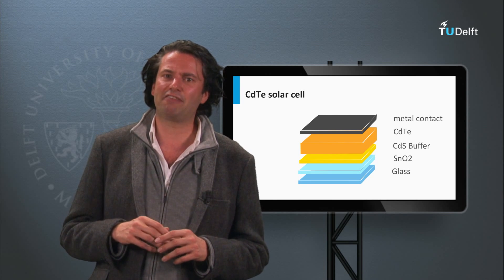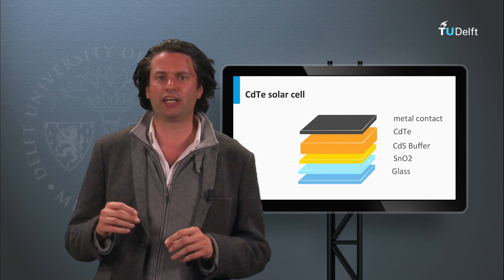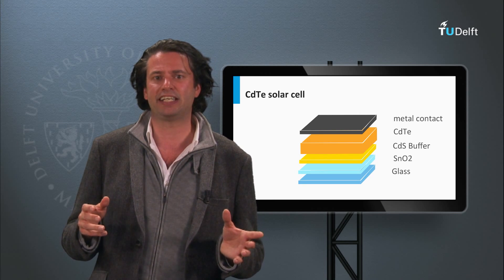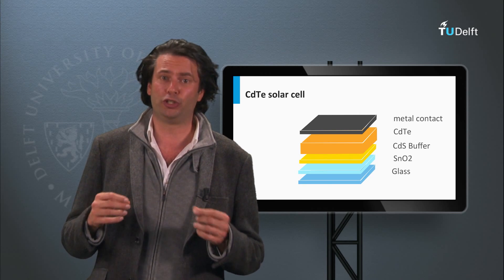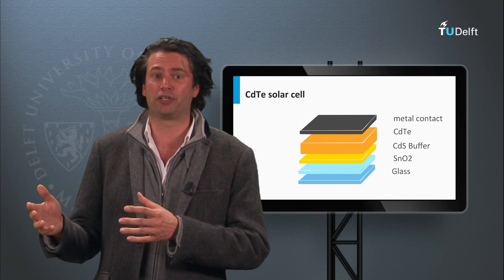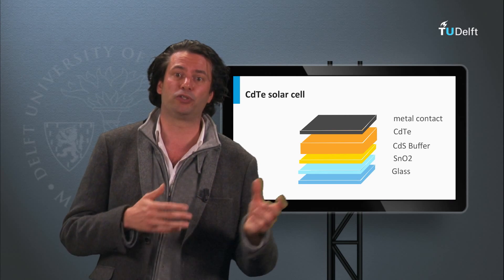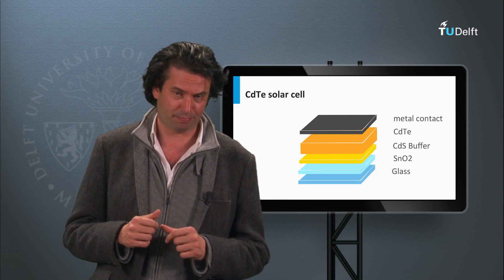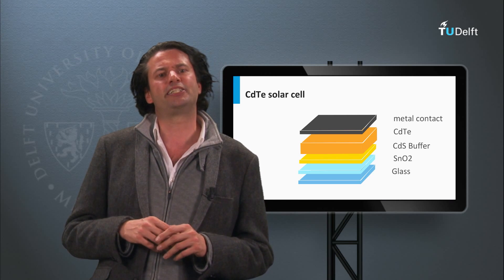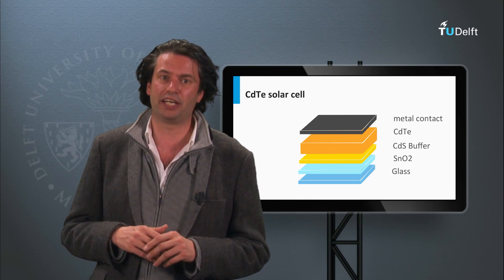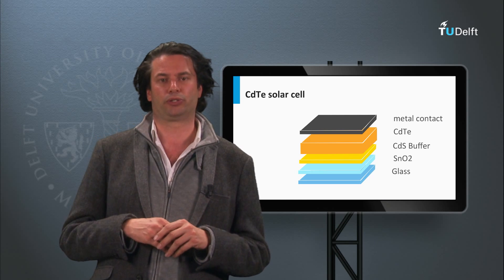Copper containing contacts have been used as back contacts. However, in long timescales they may face instability problems due to the diffusion of copper through the cadmium telluride layer up to the cadmium sulfide buffer layer. Nowadays a stable antimony telluride layer in combination with molybdenum is used.